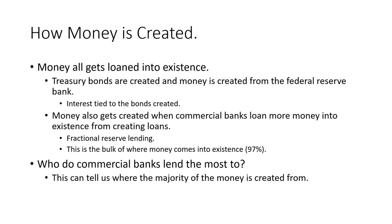There's another portion where the majority of the money gets created. Money also gets created when commercial banks loan more money into existence from creating loans. This is called fractional reserve lending, where they keep only a fraction of the reserve back and the other percentage of the loan gets created from nothing. That's where the majority of the money gets created — approximately 97% of all money being created.